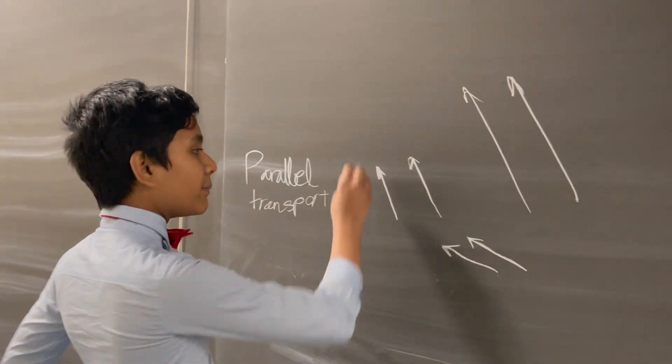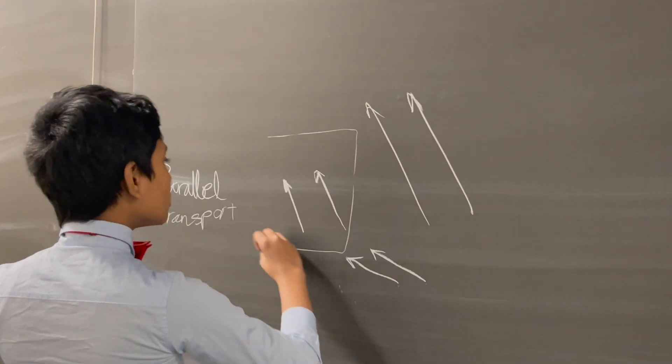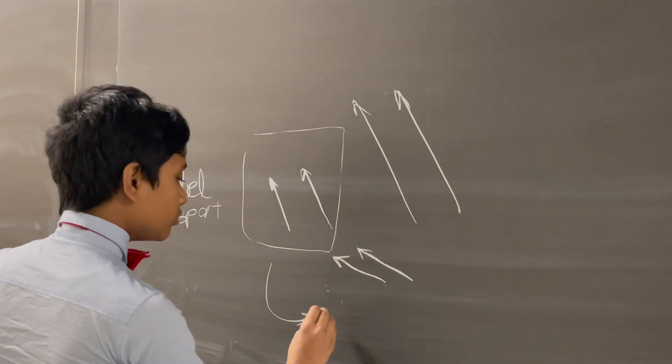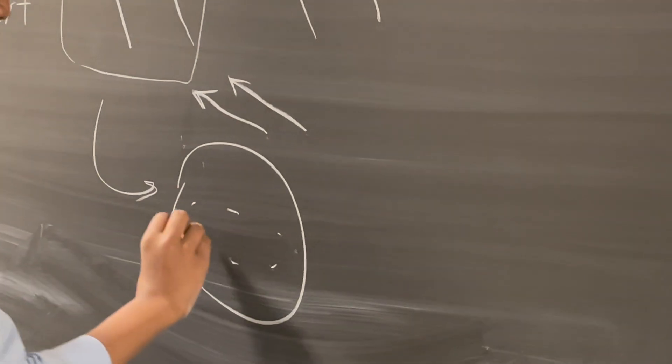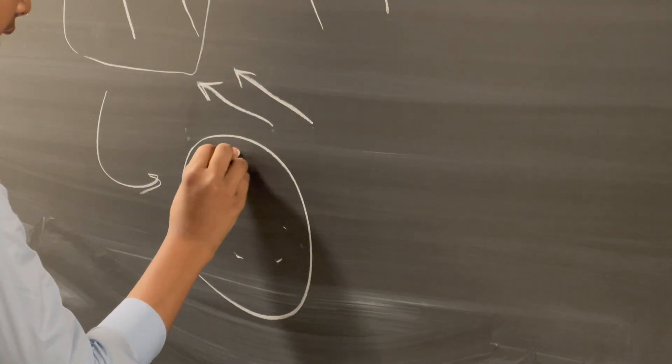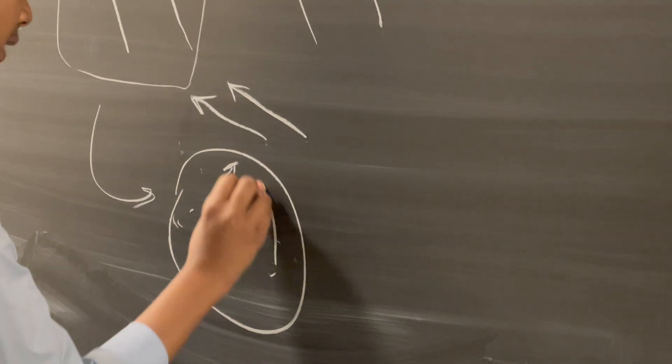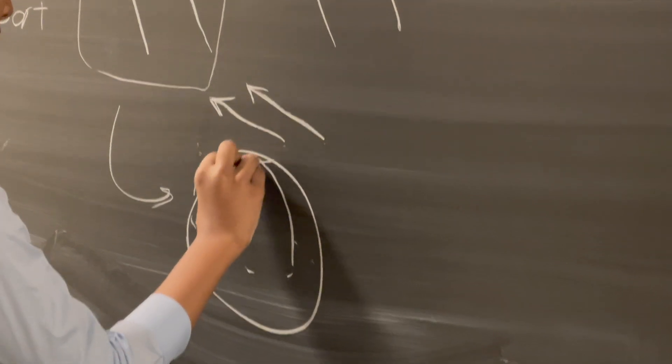But if you try mapping this flat coordinate plane onto, say, a manifold, like a sphere, a curved manifold, then these two vectors are no longer going to end up being parallel. Their directions are eventually going to meet somewhere.